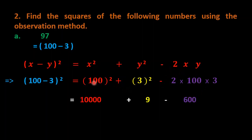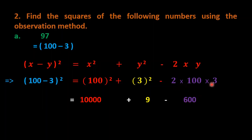Now we calculate each term. For 100²: 1 × 1 = 1 with four zeros, giving 10000. Then 3² = 9. For the last term, 2 × 100 × 3: multiply 2 × 1 = 2, then 2 × 3 = 6, and append the two zeros from 100, giving 600. So we have three terms: 10000, 9, and 600.